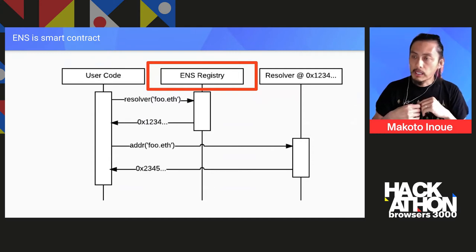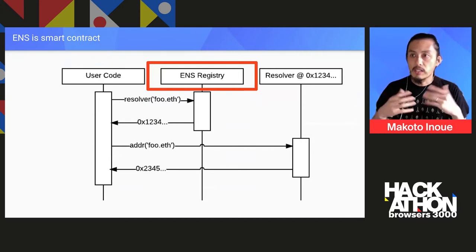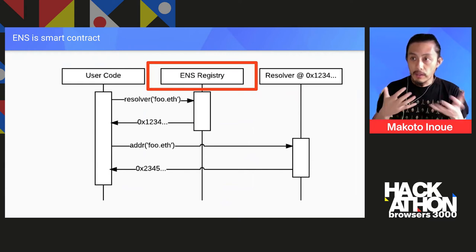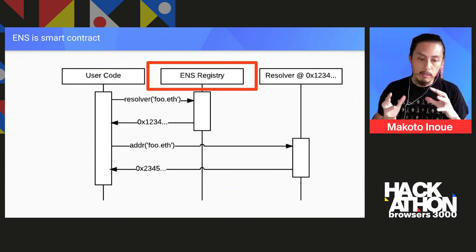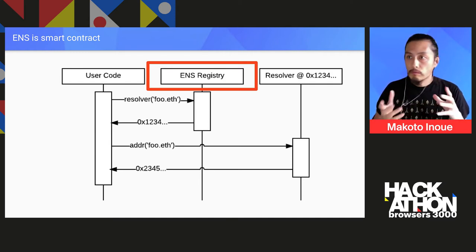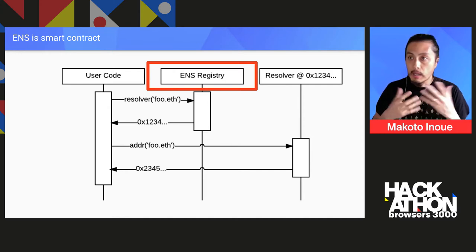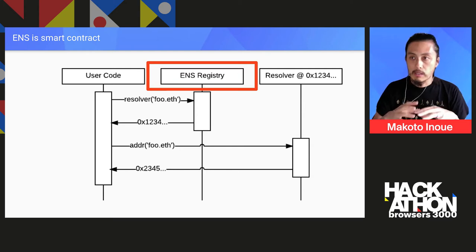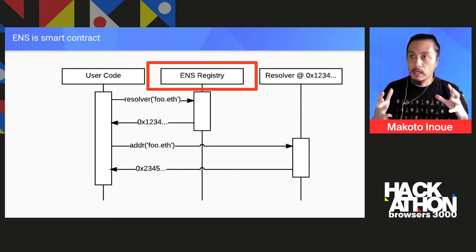ENS is not part of the blockchain itself, but it's actually built as a smart contract, which is a unique feature of Ethereum where you can write a program that controls the flow of money. Famous applications in Ethereum include automated market exchanges or lending platforms, but we use the same basic programming language to build a basic name service.